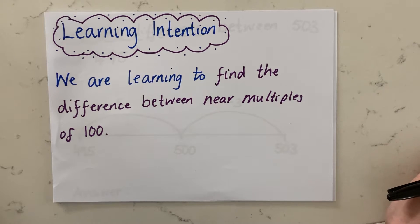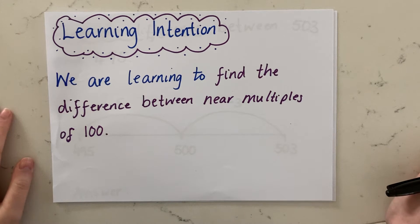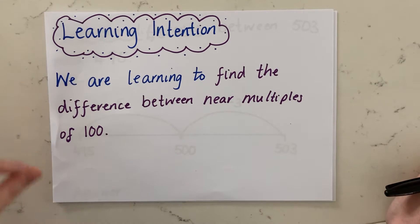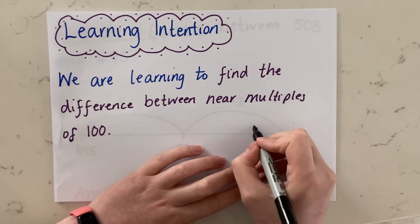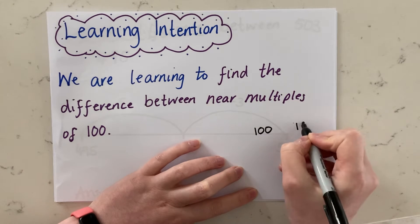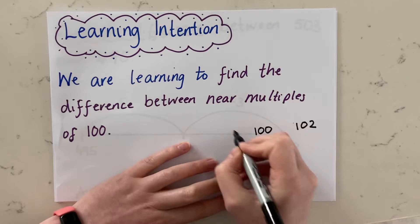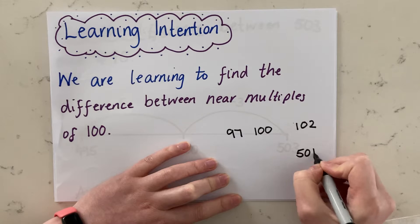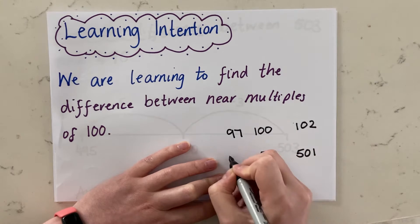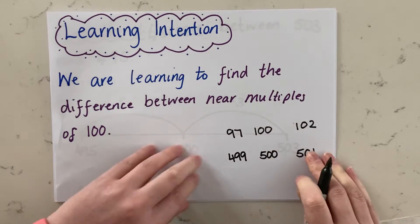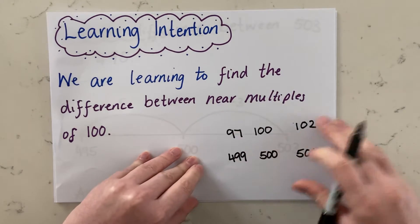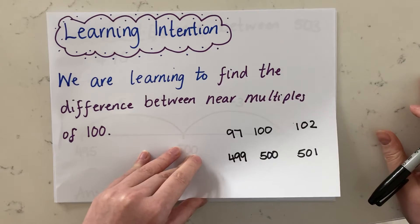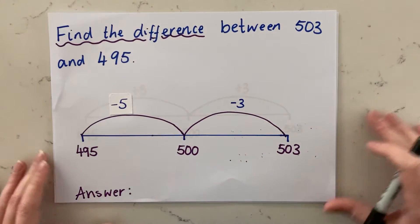Hello, Primary Five. It's maths time and our learning intention today is we are learning to find the difference between near multiples of 100. So you're going to be given two near multiples of 100. A near multiple of 100 might be 102 because it's very close to 100, or 97, or 501 because it's very close to 500, or 499. You're going to be given two and asked to find the difference. We're continuing our subtraction block here, so let's get straight into it with some examples.